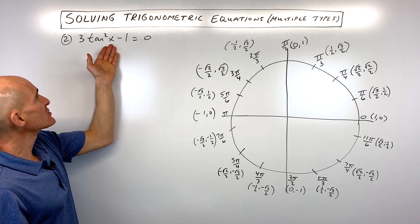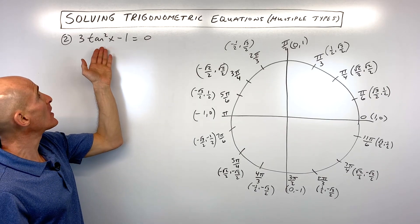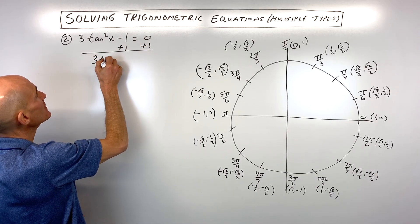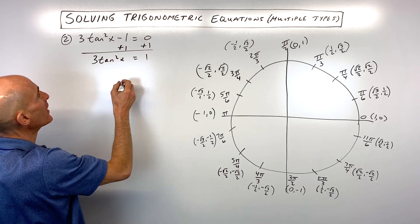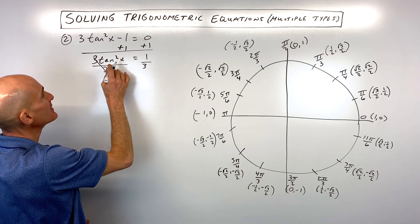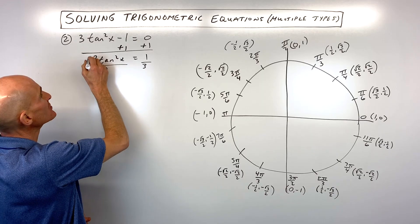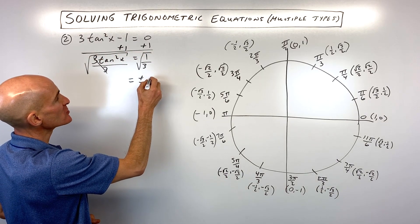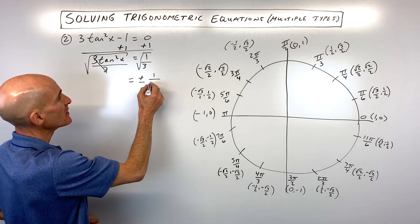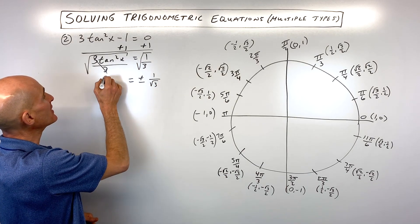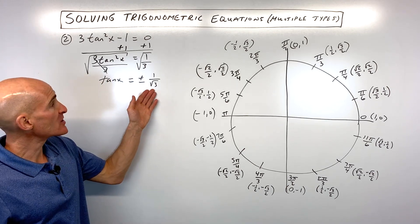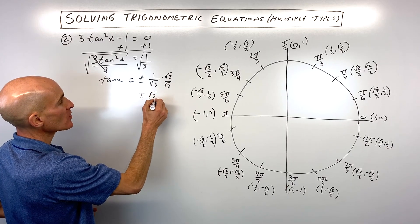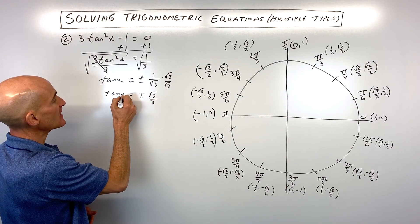For number 2, we've got 3tan²(x) - 1 = 0. We want to get tangent by itself, so let's add 1 to both sides: 3tan²(x) = 1. Divide both sides by 3, then take the square root of both sides. Remember, when you do that you get two answers: ±√(1/3), which simplifies to ±1/√3. Rationalizing by multiplying top and bottom by √3 gives us ±√3/3 = tan(x).